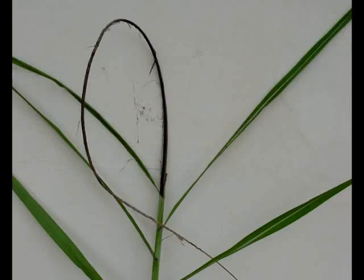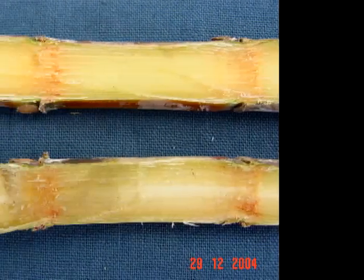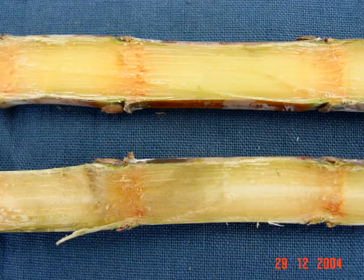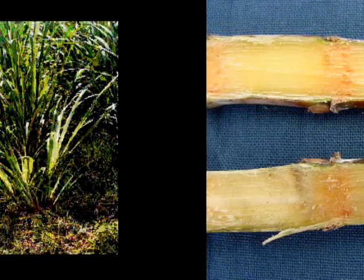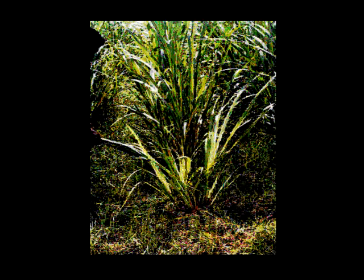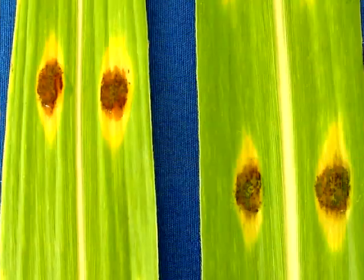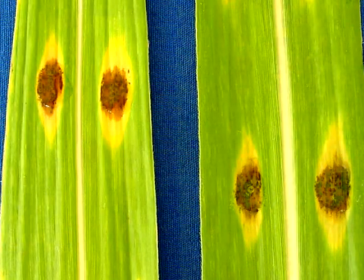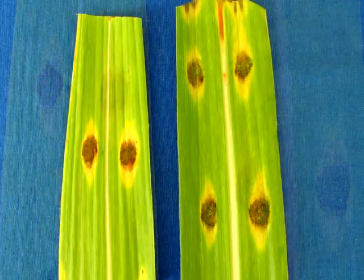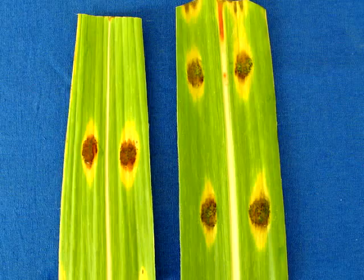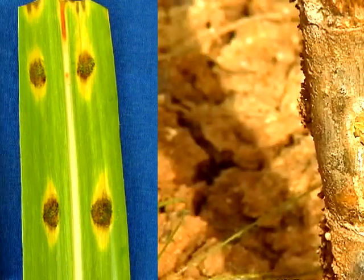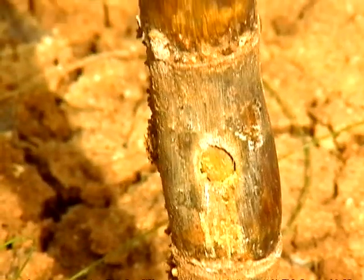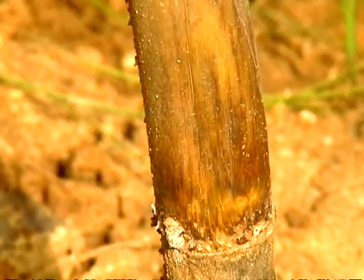Among fungal diseases, red rot, smut, wilt and set rot are important. Besides these, ratoon stunting disease, grassy shoot disease and leaf spot diseases are potential diseases which can cause considerable damage.